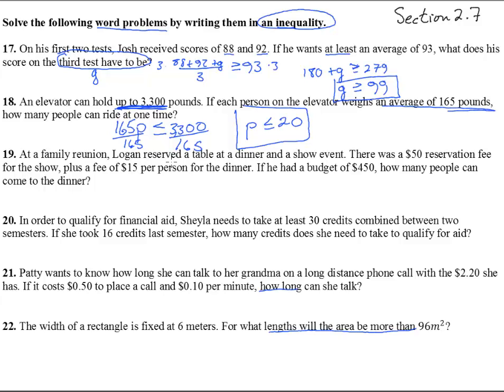On the next one, at a family reunion, Logan reserved a table at a dinner and show event. There was a $50 reservation, so he's paying $50 plus $15 for every person. If he had a budget of $450, that's his maximum, less than or equal to $450. How many people can come to dinner? So subtract 50, subtract 50, and we get 15P is less than or equal to 400.